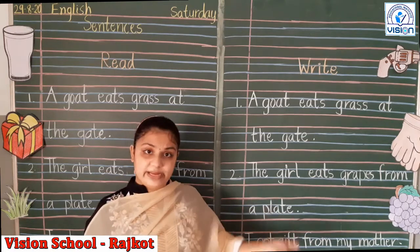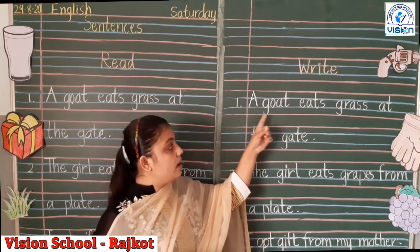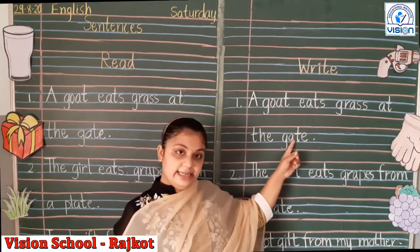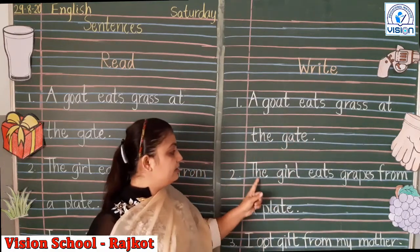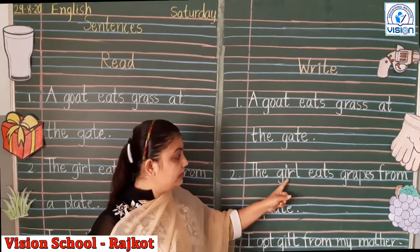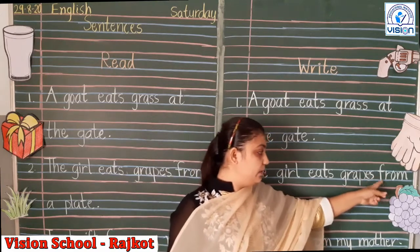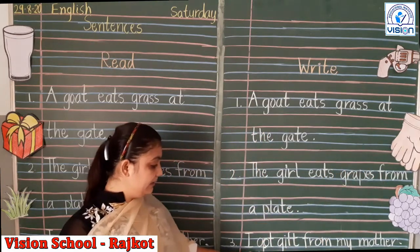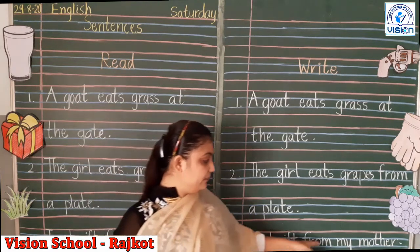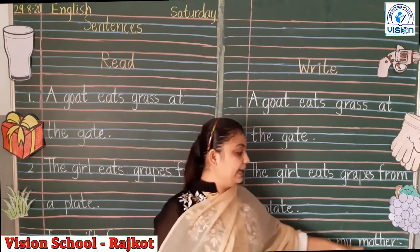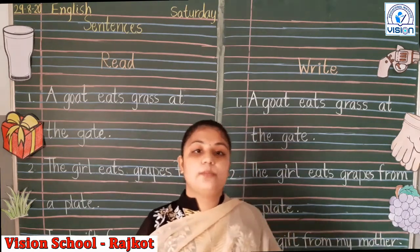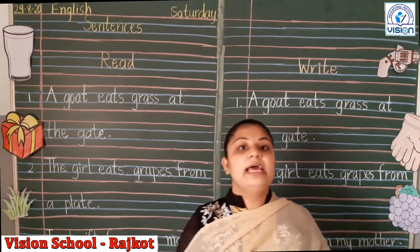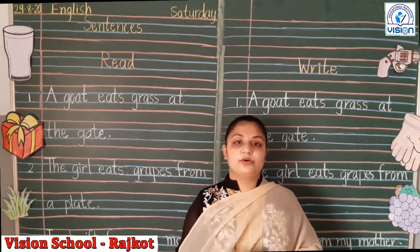After that, we have to write the same sentences. So let's revise once. The first one: 'A goat eats grass at the gate.' The second one: 'The girl eats grapes from a plate.' The third one: 'I got a gift from my mother.' Please, kids, do these sentences in your CW book and in your combo also.